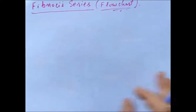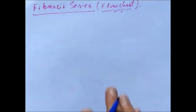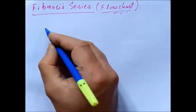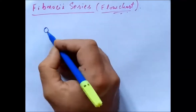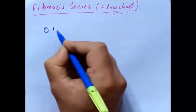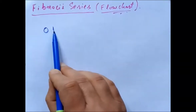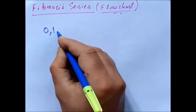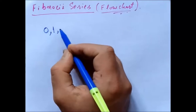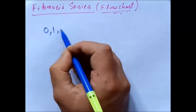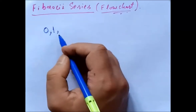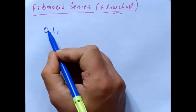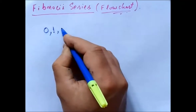I will write this series first and explain how it is written. Suppose we start with 0, then 1 — these are the first two numbers of the series: 0, 1. The third element of the series will be the sum of the first two elements: 0 plus 1, which is equal to 1.